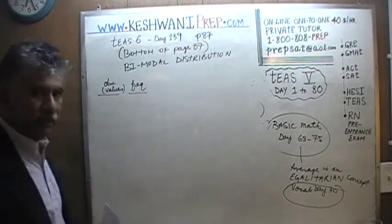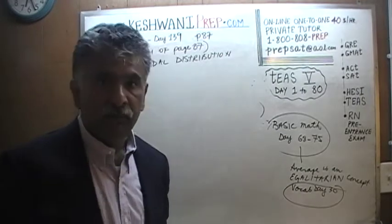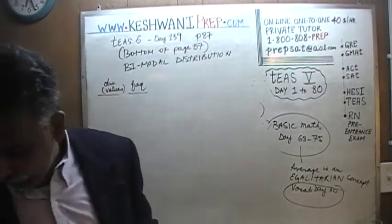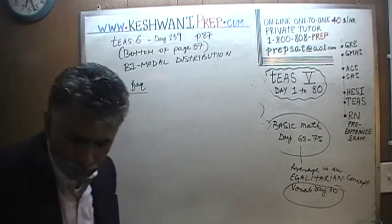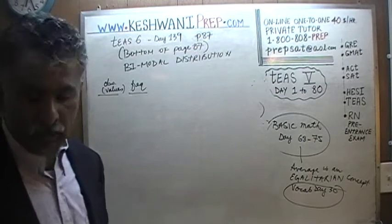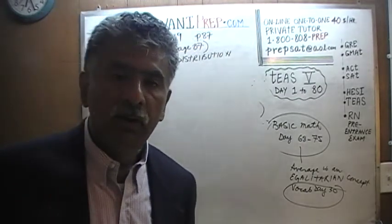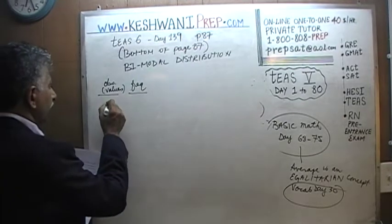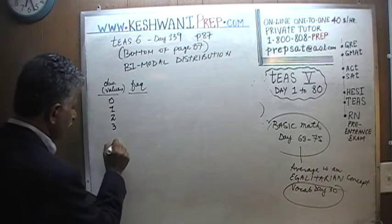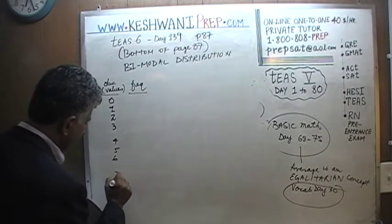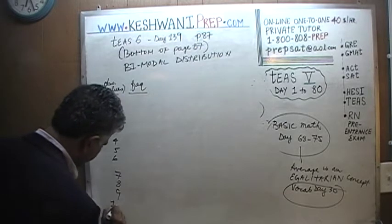Think of this in terms of an exam. An exam was given where the highest score you could have gotten was 10 on the quiz. You can have scores of 0, 1, 2, 3, 4, 5, 6, 7, 8, 9, and 10.